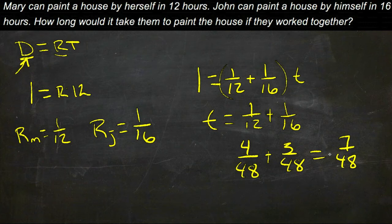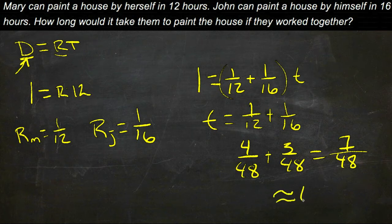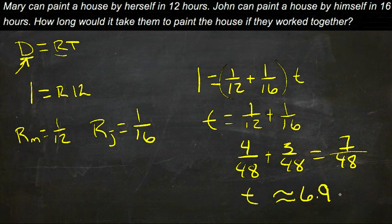And since 6 times 7 is 49, I'm sorry, since 7 times 7 is 49, 6 point something really high is going to be what 7/48 is. So we're going to say approximately equal to about 6.9. So together, their total time would be 6.9 hours.